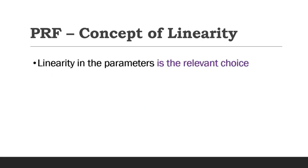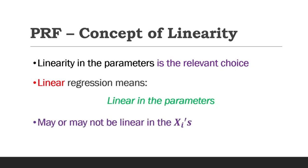Linearity in the parameters is actually the relevant choice for developing regression models, and so the term linear regression really implies linearity in the parameters. Although it may or may not be linear in the explanatory variables or xi's, as long as it is linear in the parameters, our regression models can be developed and estimated.